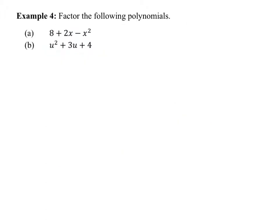Feel free to FOIL it back out and you'll get the correct answer. You really need to practice what we just did — it becomes second nature if you practice enough examples. You look for that first and third term being perfect squares. For the last example — part A — how would you go about it? The easy way is to rearrange it. Write it in decreasing degree. Please write all your polynomials in decreasing degree; it makes it look a lot better.